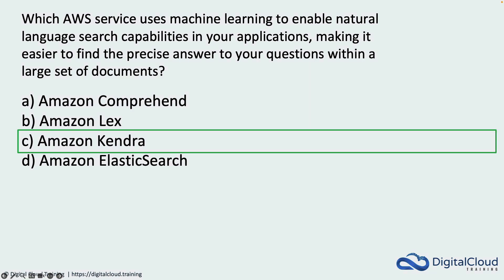Amazon Kendra is the correct answer. It is a highly accurate and easy-to-use enterprise search service powered by machine learning. It uses natural language search capabilities, meaning users can ask questions using everyday language, and Kendra finds the precise answers within a document set.